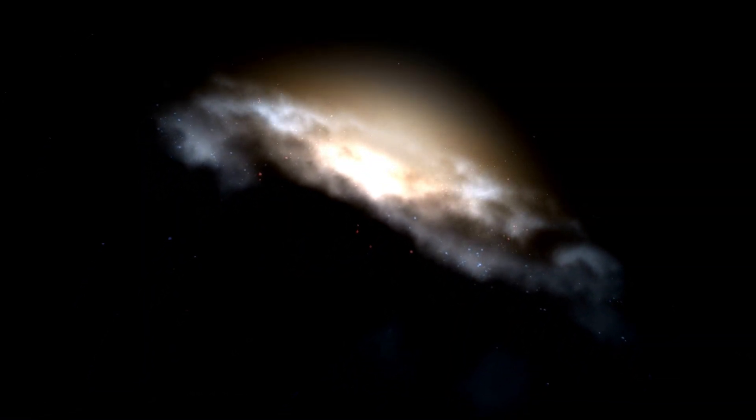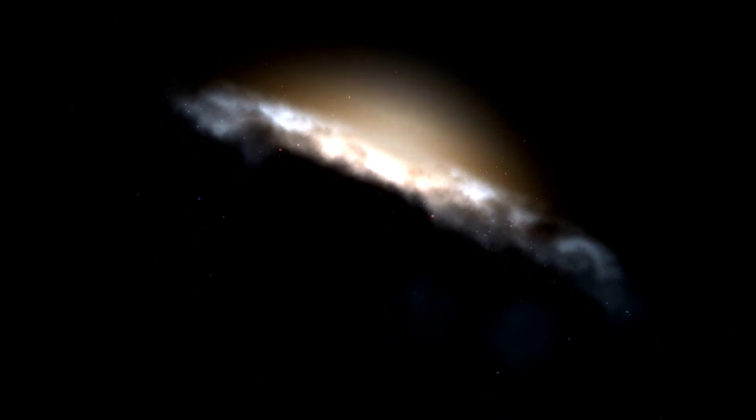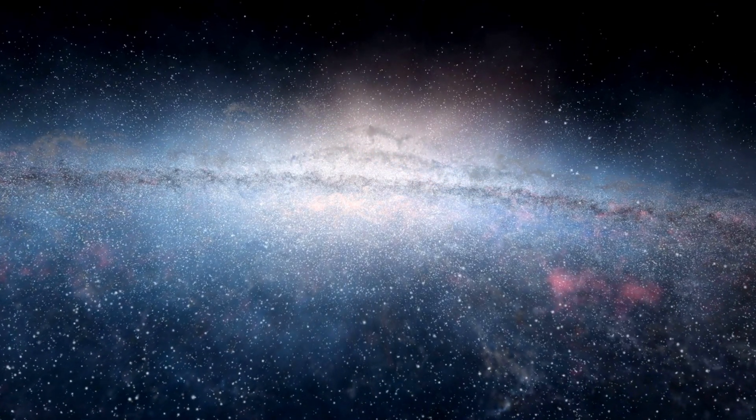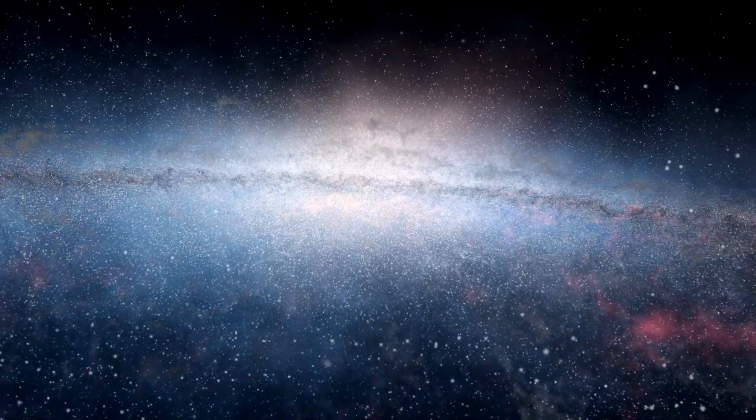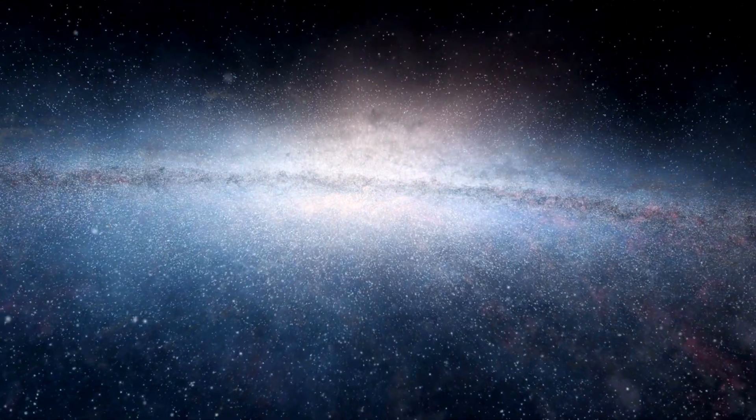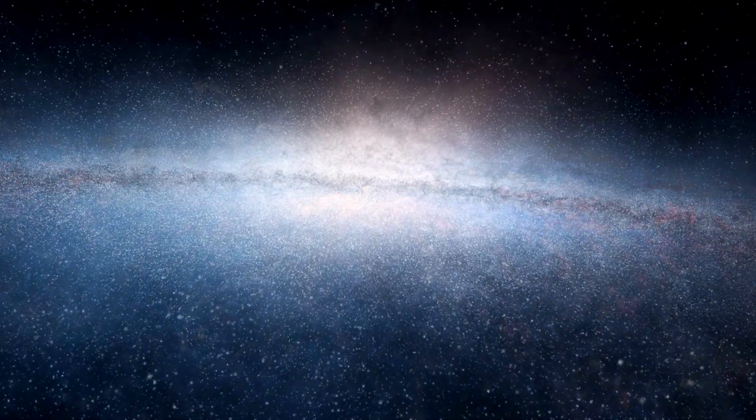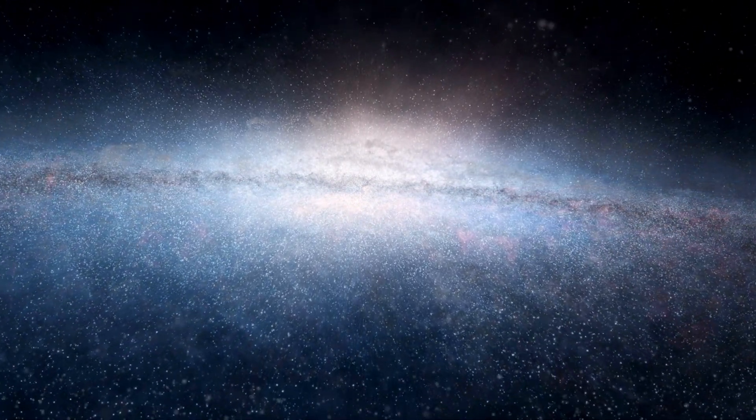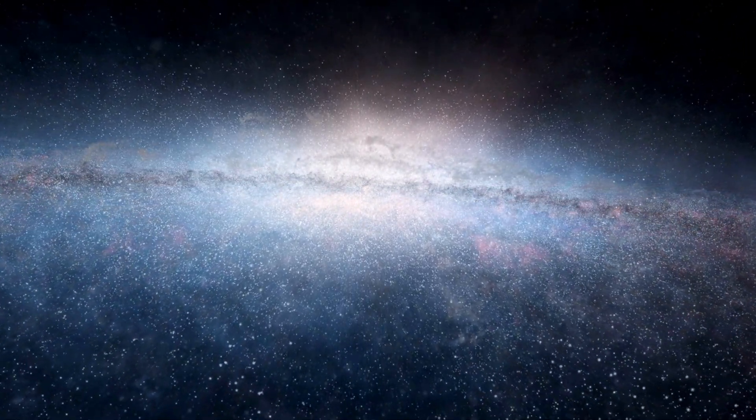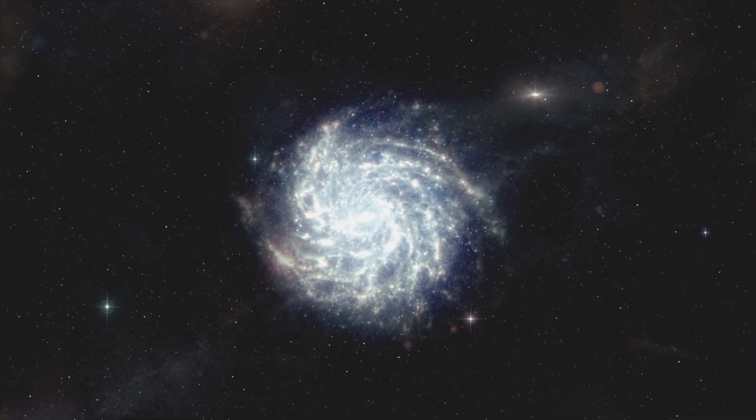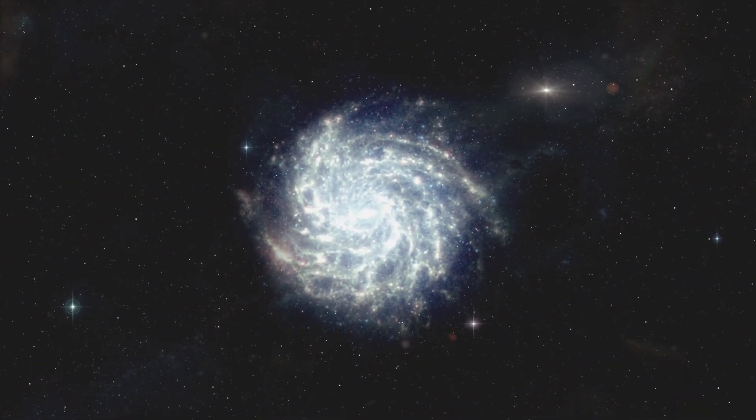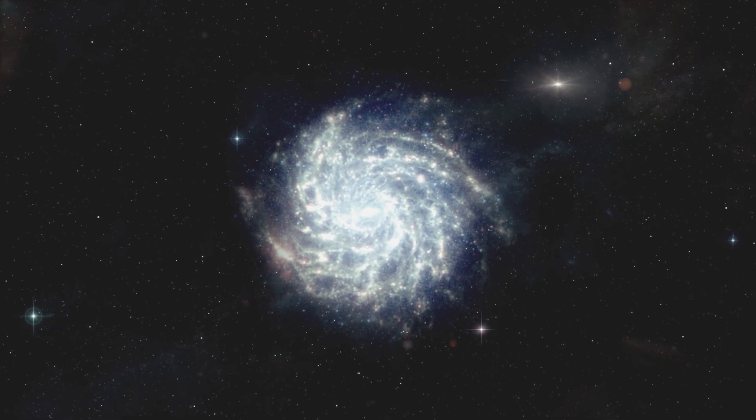The early universe was a relatively uniform sea of several thousand degree gas, and the unseen, mysterious, and dominant form of matter that is known to exist indirectly due to its gravitational influence, called dark matter. But how galaxies, stars, and black holes came together is the key to solving the early universe's puzzle.